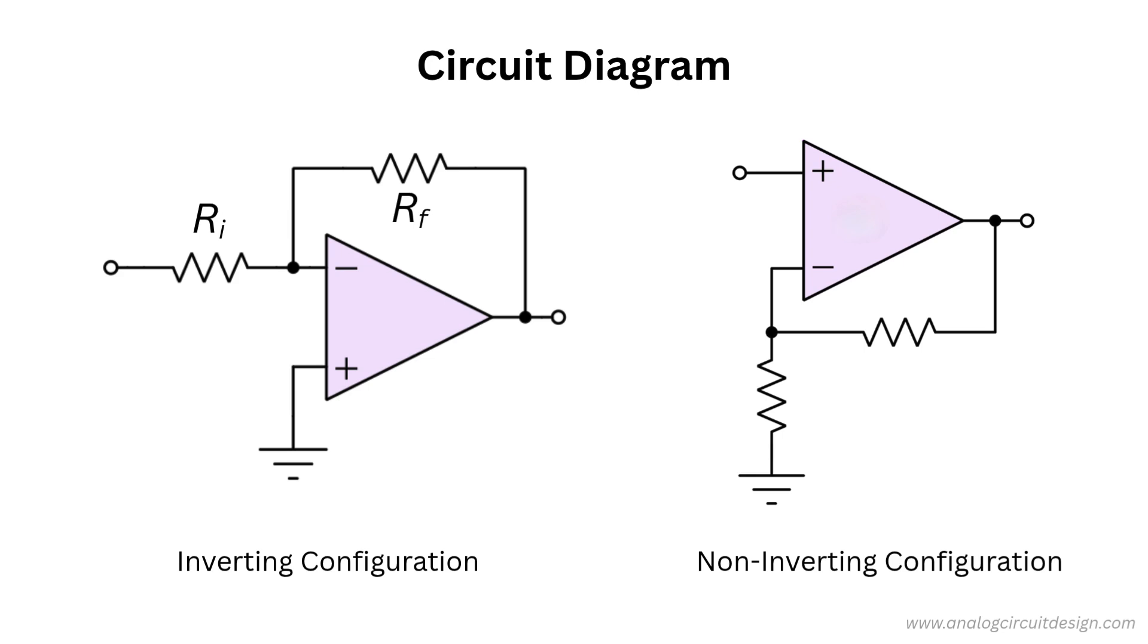Now, let's look at the non-inverting amplifier. In this setup, the input signal goes directly to the non-inverting input. The negative feedback is applied to the inverting input through a resistor divider formed by RF and RG. The output follows the input's phase. There's no inversion.